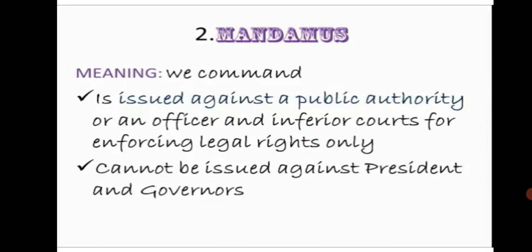The second writ is mandamus, meaning 'we command.' It is issued against a public authority, an officer, or inferior courts for enforcing legal rights only. It cannot be issued against the President or Governors. Mandamus is an order of the Supreme Court or High Court commanding the government to perform an action that is its duty to perform in the interest of the public.